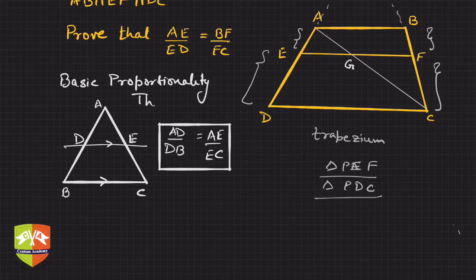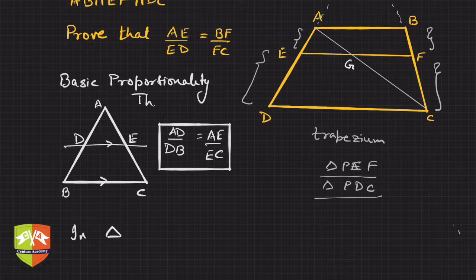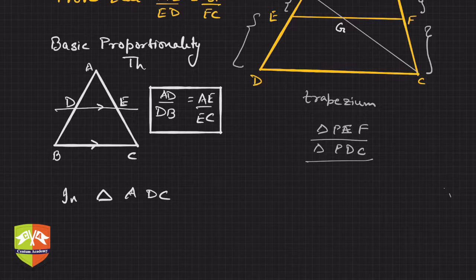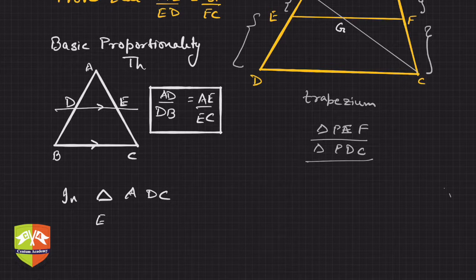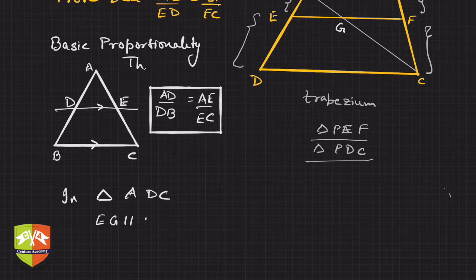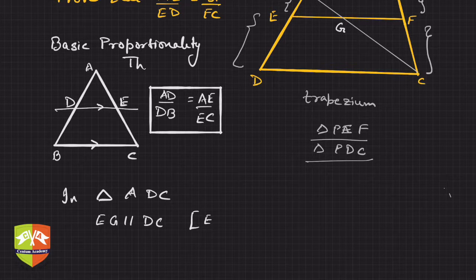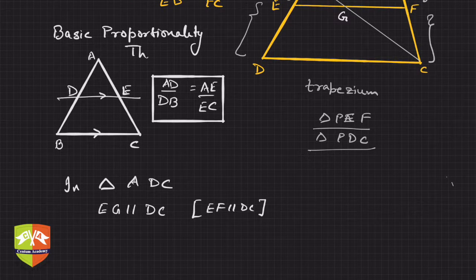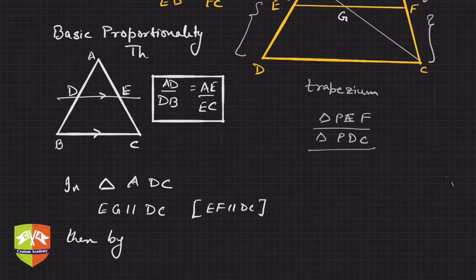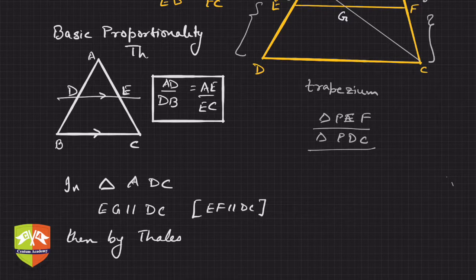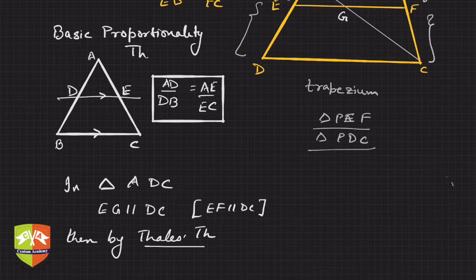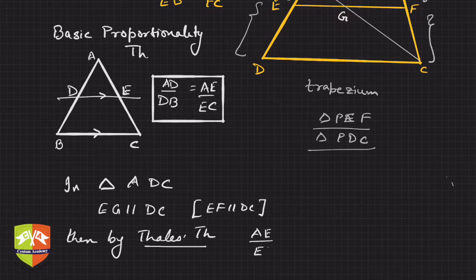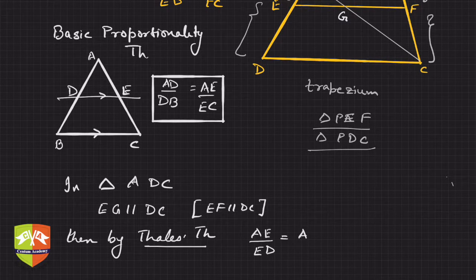Now in triangle ADC, let's consider triangle ADC. Clearly EG is parallel to DC. Why? Because it's given that EF is parallel to DC. Then by Thales' theorem,